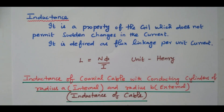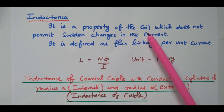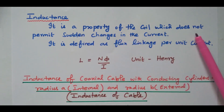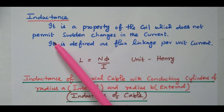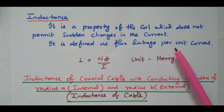Welcome viewers. In this video, we will see the definition of inductance and derivation of inductance of coaxial cable, that is an underground cable or normally a cable. First we will see the inductance. The inductance is a property of the coil which does not permit sudden changes in the current.